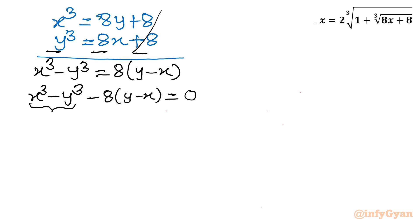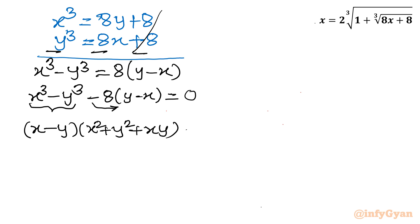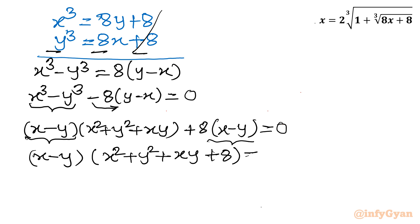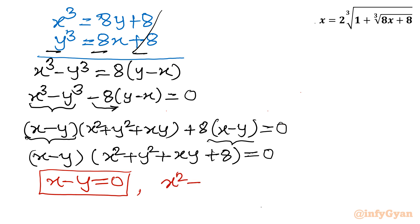I apply the a³ − b³ formula and bring the minus into the bracket. This gives (x − y)(x² + y² + xy) + 8(x − y) = 0. Since (x − y) is a common factor, I take it out: (x − y)(x² + y² + xy + 8) = 0. Setting each factor to zero: x − y = 0, or x² + y² + xy + 8 = 0.